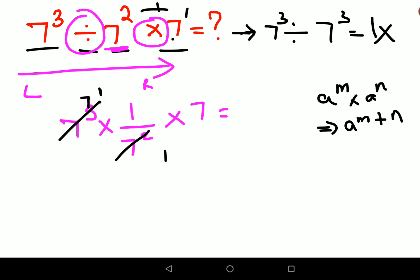For those who don't understand: a raised to m divided by a raised to n can be written as a raised to m minus n. So this becomes 7 raised to 3 minus 2, times 7. That becomes 7 raised to 1, which is just 7 times 7.